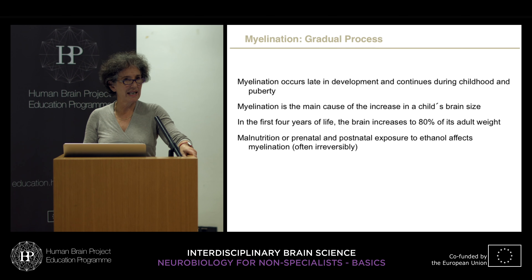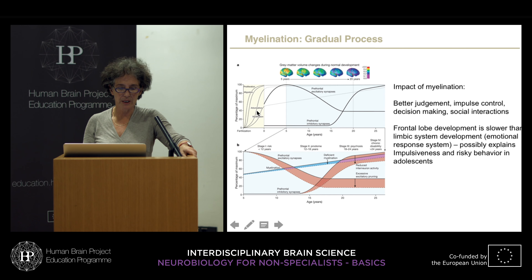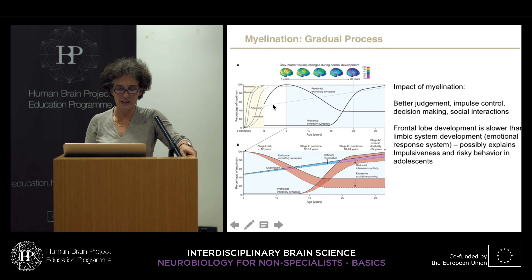Here is a nice summary of the impact of myelination. Starting from fertilization, we have proliferation, migration of neurons, synaptic contacts, and then myelination. You can see that it really stretches out throughout puberty, throughout childhood, even into 20, 25, 30 years — myelination is still going on.